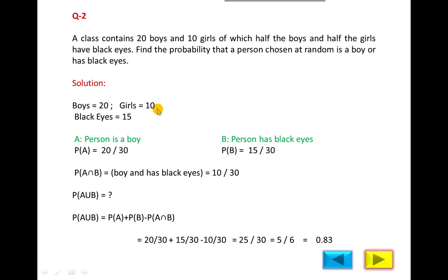We will use 30 in the denominator. Of which half the boys, out of 20, is 10; half the girls, out of 10, is 5. So 10 plus 5 equals 15 have black eyes.